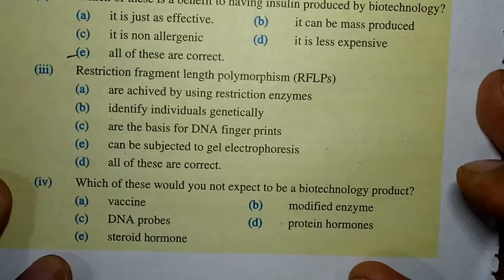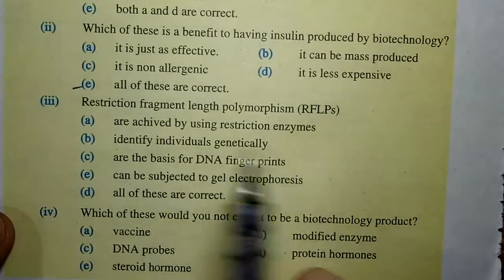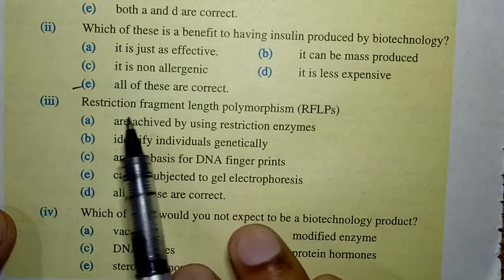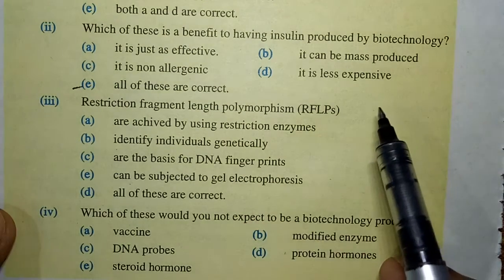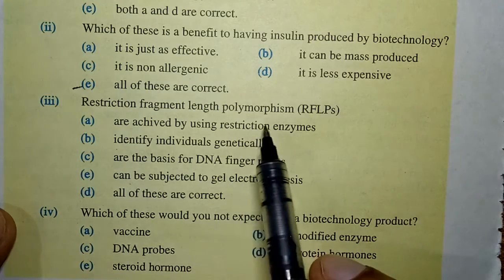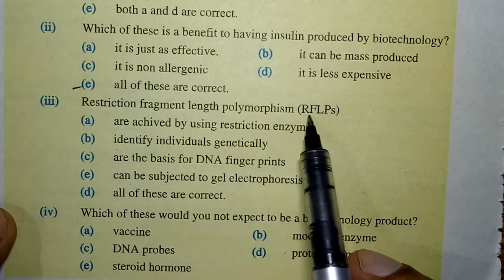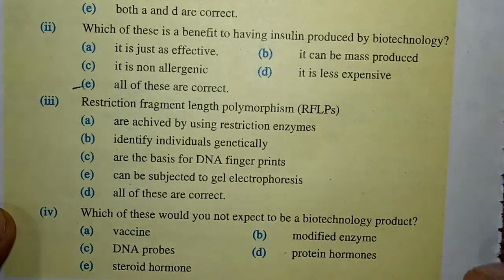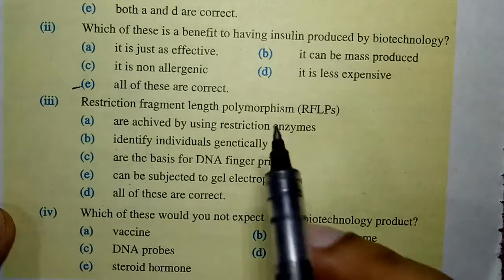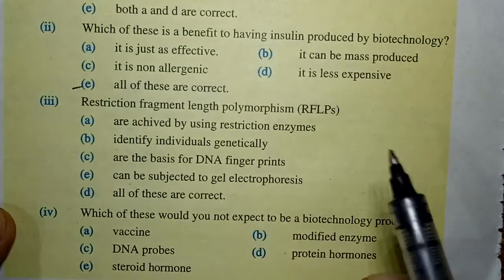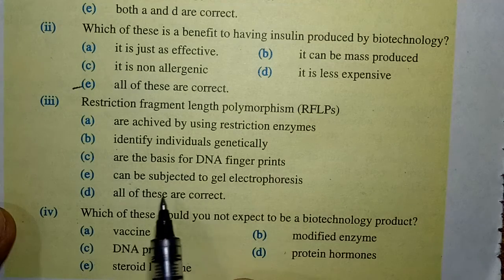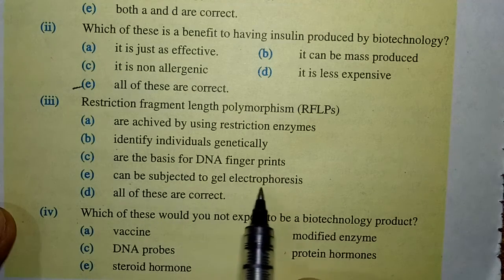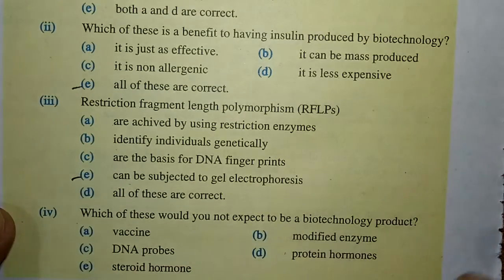The third multiple choice question is about restriction fragment length polymorphism — RFLP. RFLPs can be subjected to gel electrophoresis, which is the correct answer.